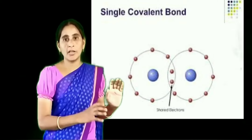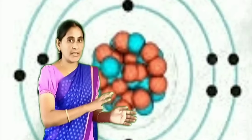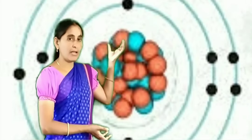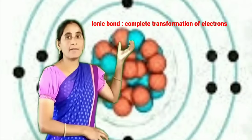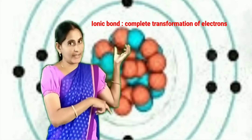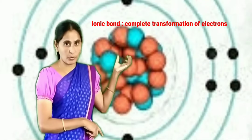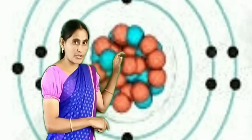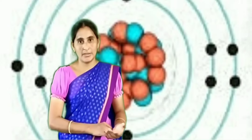Let us go through the differences between ionic bond and covalent bond — this is a very important question. You must learn why some elements form ionic bonds and others covalent bonds. The ionic bond forms when elements are ready for complete transformation of electrons. Regarding electronegativity: if the electronegativity difference is 1.9 kilojoule per mole or greater than 1.9, those elements form an ionic bond. If less than 1.8, they involve in covalent bond formation. That is the first major difference.